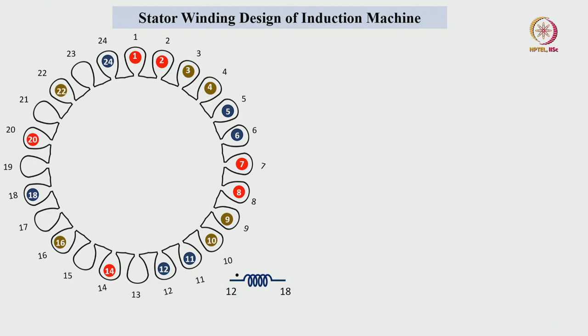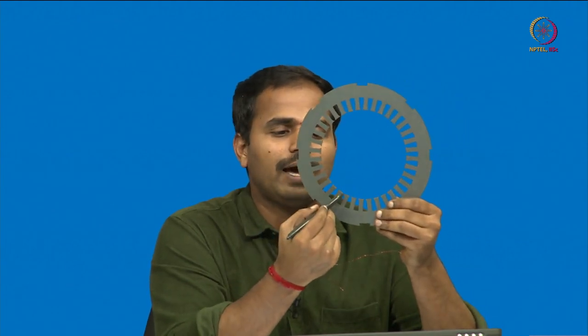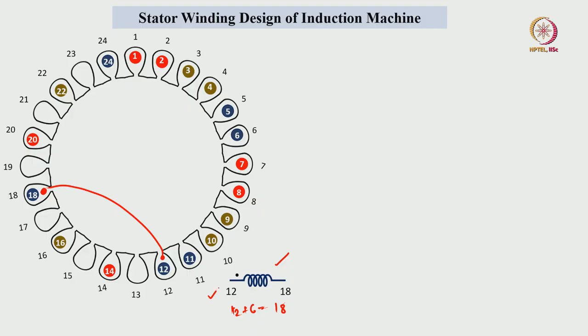The next coil is placed in slot number 12 and slot number 18 — 12 plus 6 equals 18. We have to make 12 coils initially and insert each coil side one by one. This coil side is placed in the 12th slot and the other in the 18th slot. The opening of the stator core lamination is 2 to 5 times the conductor cross-sectional area, so the conductors must be placed in the slot one by one.